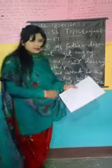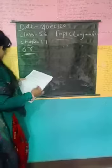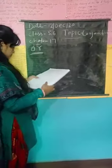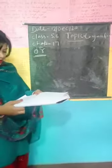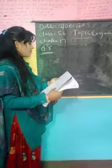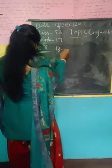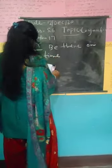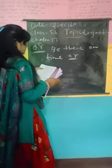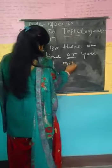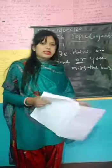So here is our conjunction 'or.' Let's see its uses. It shows an option — it presents alternative ideas or a choice between two things that you like. Here is an example: Be there on time, or you will miss the bus. So the rest of this you will see in the next video. Thank you for watching.